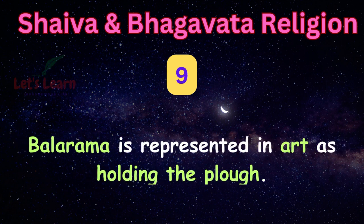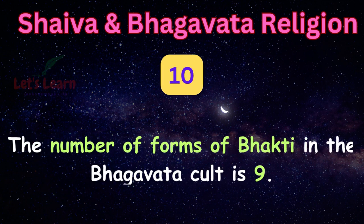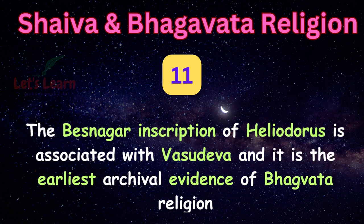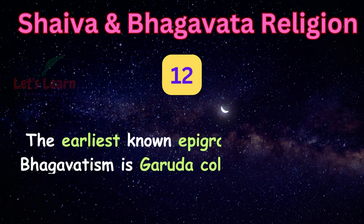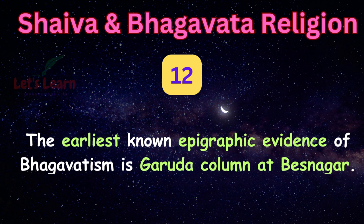Bala Rama is represented in art as holding the plough. The number of forms of Bhakti in the Bhagavata cult is 9. The Besnagar inscription of Heliodorus is associated with Vasudeva and it is the earliest archival evidence of Bhagavata religion. The earliest known epigraphic evidence of Bhagavatism is the Garuda column at Besnagar.